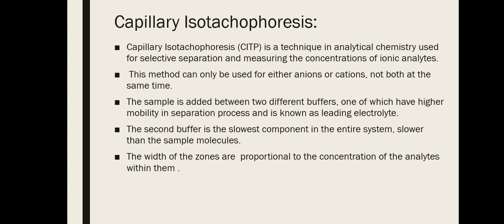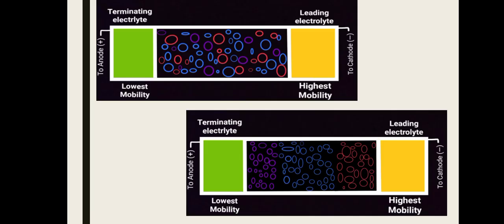The sample is added between two different buffers. Unlike the other modes where only one type of buffer is used, in CITP we use two different buffers. The one with high mobility in the separation process is known as the leading electrolyte, and the second buffer is the slowest component in the entire system — slower than the sample molecule. The one with lower mobility is termed the terminating electrolyte.